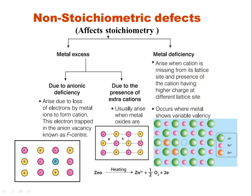To summarize, remember for each defect: which ones change density, which change the cation-to-anion ratio, and whether they are shown by ionic or non-ionic solids. This is the end of the solid state lecture. Three types of questions appear in NEET and JEE: unit cell questions, density-based problems, and defect-based problems. Previous year problems will be solved in a separate video. Review the PDF that will be shared.